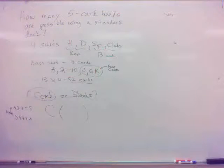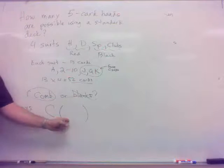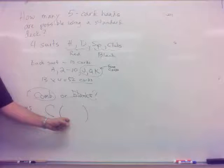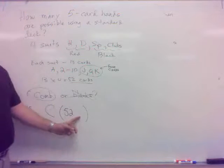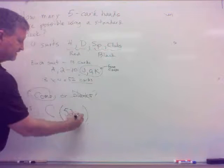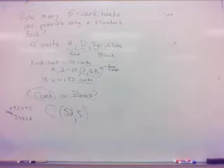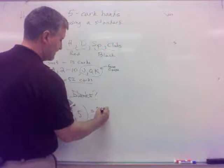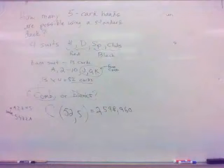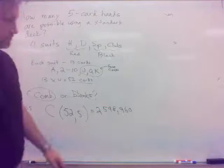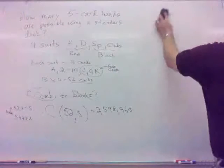All right. So, it's a combination. Now, what's my numbers? What's the first number? How many cards are there to choose from? 52. How many do I want at a time? Five. Combination? 52, five. That's going to be 2,598,960. Did you get that? Okay.